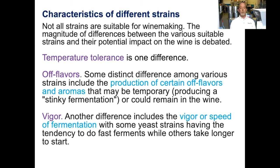Temperature tolerance is one important difference between strains. There are also differences in terms of the production of off flavors. Some distinct differences among the various strains include the production of certain off flavors and aromas that may be temporary, producing a sort of stinky fermentation, or could remain in the wine for a longer duration. Another important difference is the vigor, or the speed of fermentation — some yeast strains tend to do fast ferments while others take longer to start.